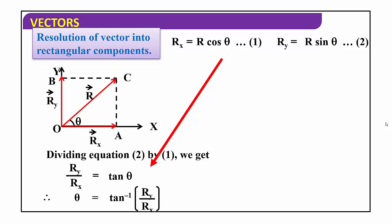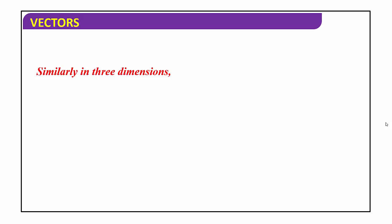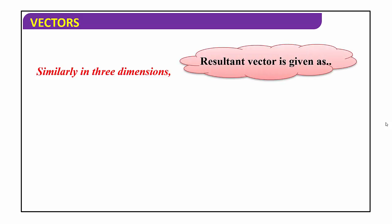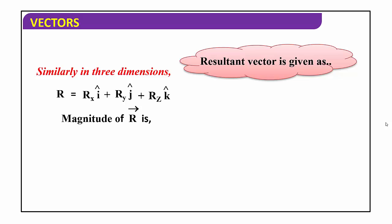This is all about rectangular components of vector r in two dimensions. For three dimensions, if there are three axes — x, y, and z — then the resultant vector is written as r = Rx·î + Ry·ĵ + Rz·k̂, where î, ĵ, and k̂ are the unit vectors with value 1 along the x, y, and z axes respectively. The magnitude is r = √(Rx² + Ry² + Rz²) for three dimensions.